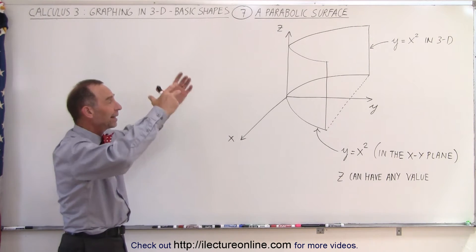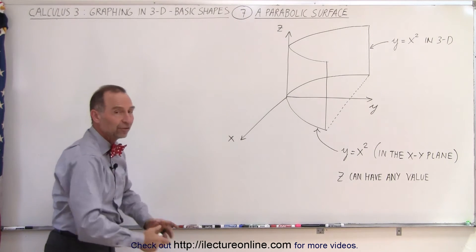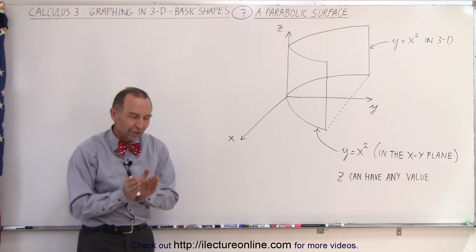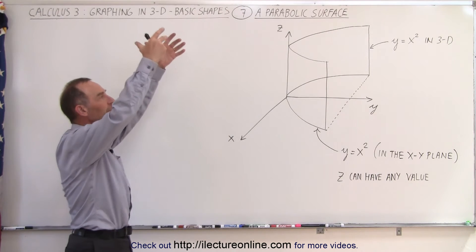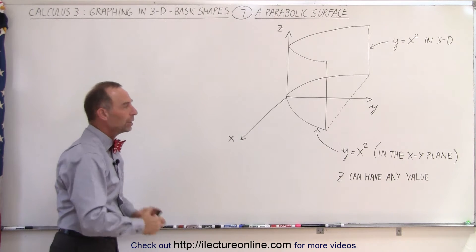So then you project that into the z direction, both in the positive and negative z direction, which basically then gives you what we call a parabolic shape or parabolic surface that goes infinitely into the z direction, positive or negative.